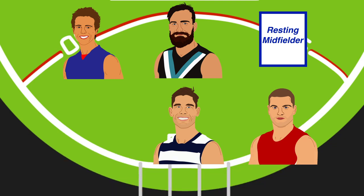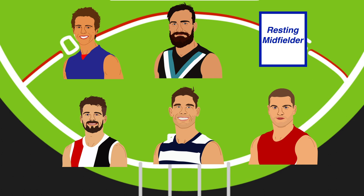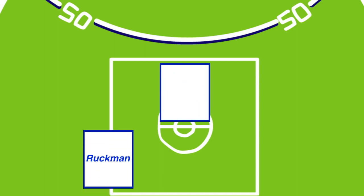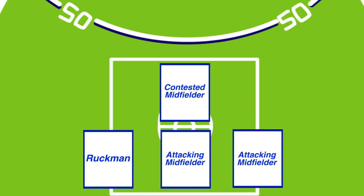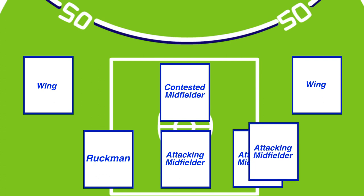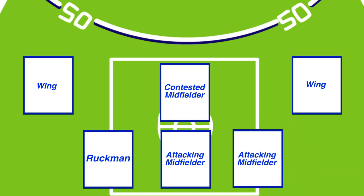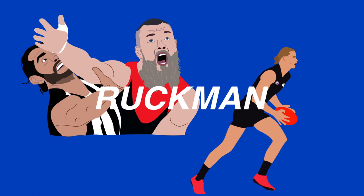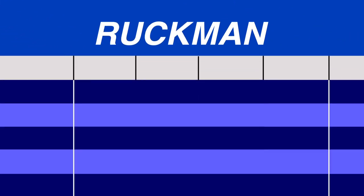With 5 forward line spots now filled, it was up to the midfield stats to determine the 6th. For the midfield, we wanted to provide balance. There would be one ruckman on the field, tapping it down to a centre, who was picked as a contested, pressure-applying player to complement two more dynamic attacking midfielders. The two wingers' stats were based on their ability to find the ball in space and dispose of it effectively. The final half forward flank was filled by the 3rd placed midfielder for attacking stats. For rucks, we wanted to capture a balance between dominance in the contest and ability around the ground.